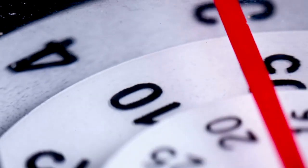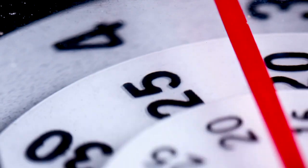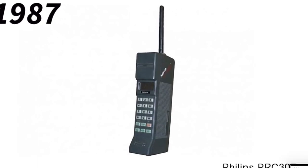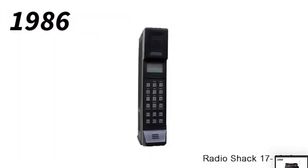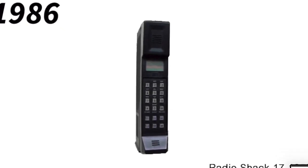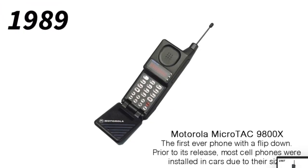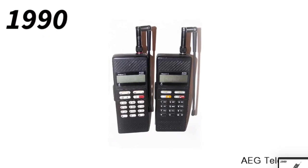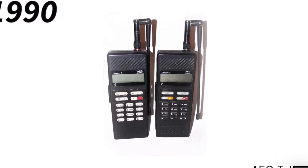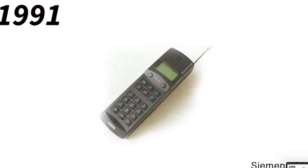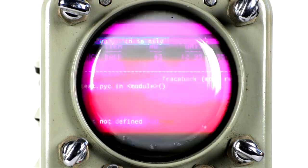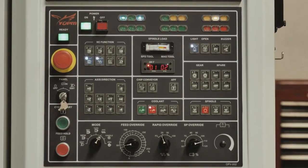First generation was the wireless telephone technology introduced in the 1980s and completed in early 1990s. Its speed was up to 2.4 kbps. It allowed voice calls in only one country. 1G network was using only analog signals. In 1G technology, AMPS was first launched in the USA. Although 1G was the biggest revolution of its time, bringing the world together, there were a lot of drawbacks.